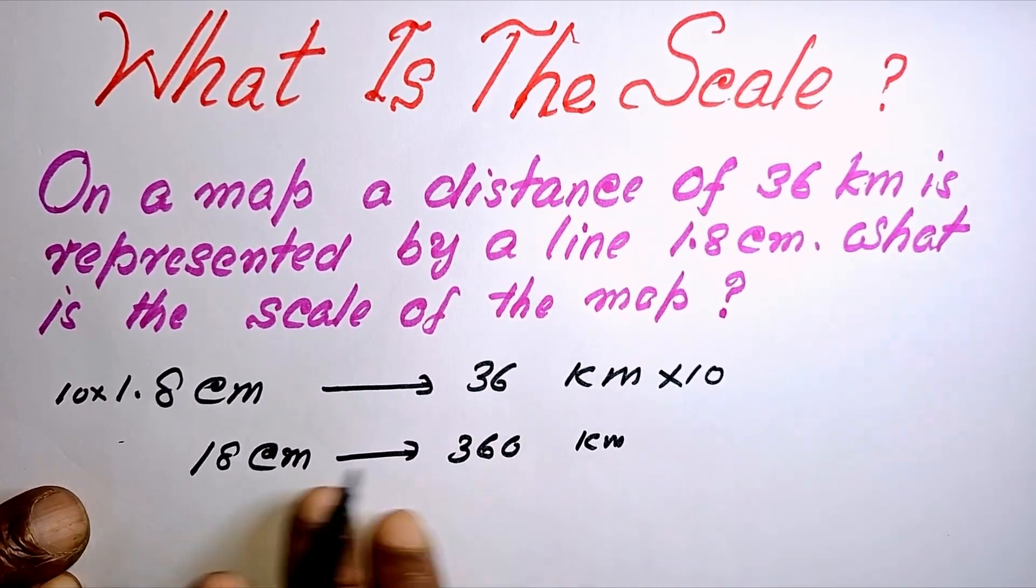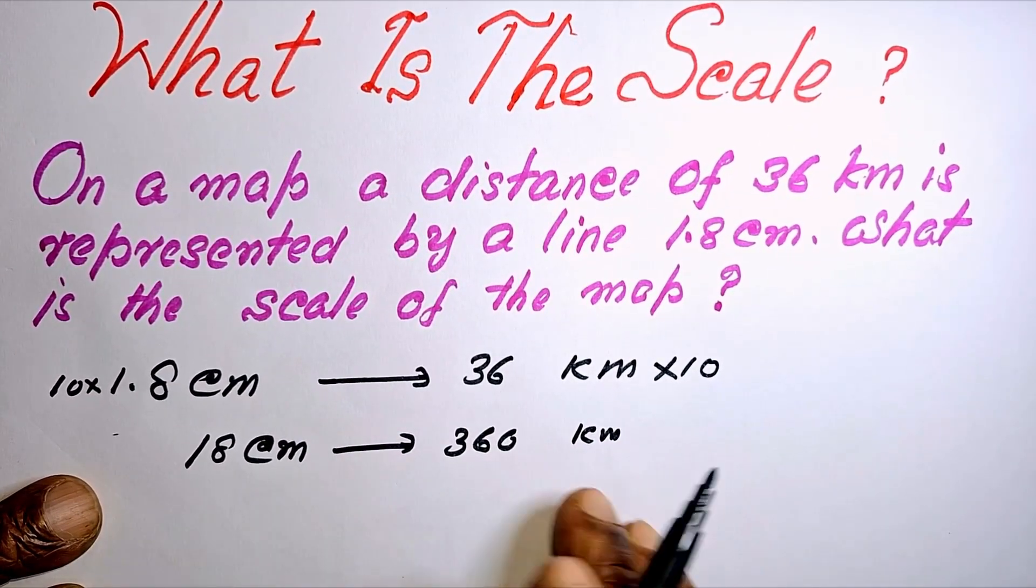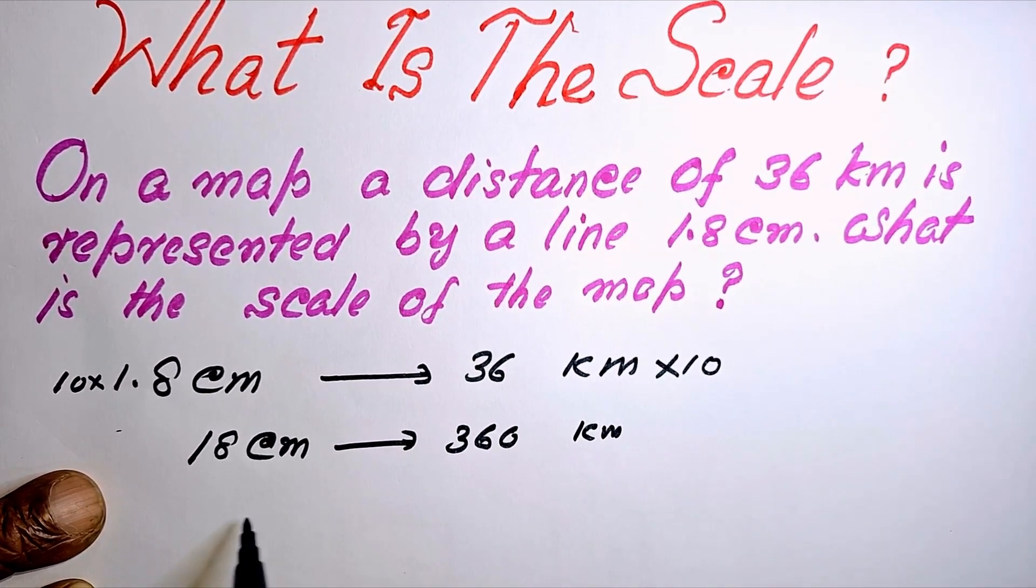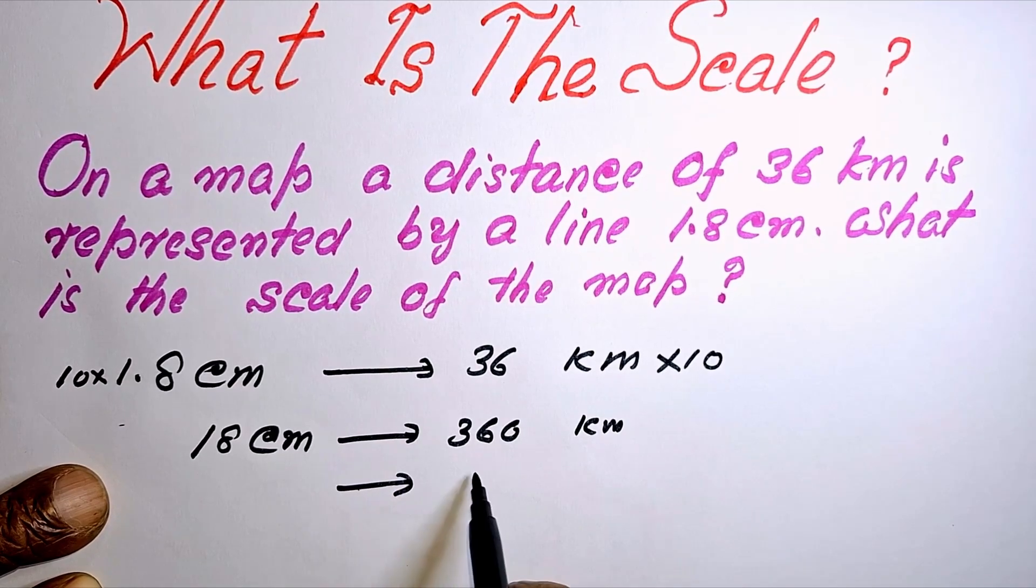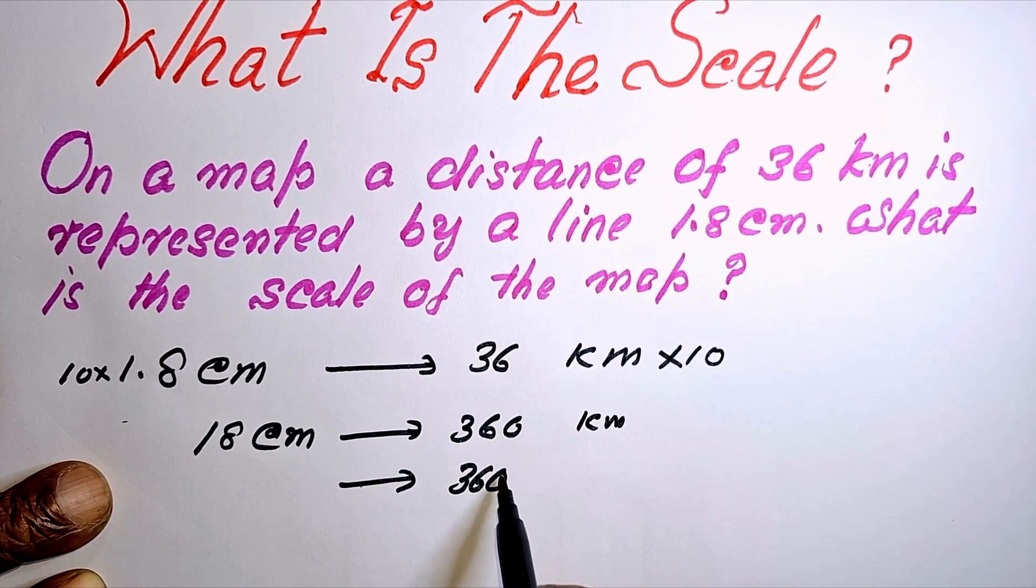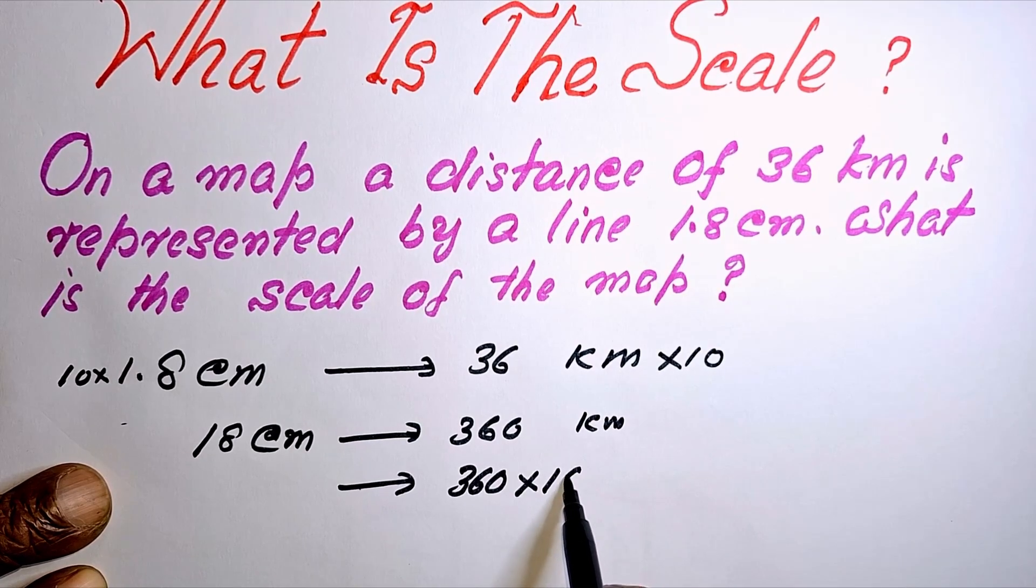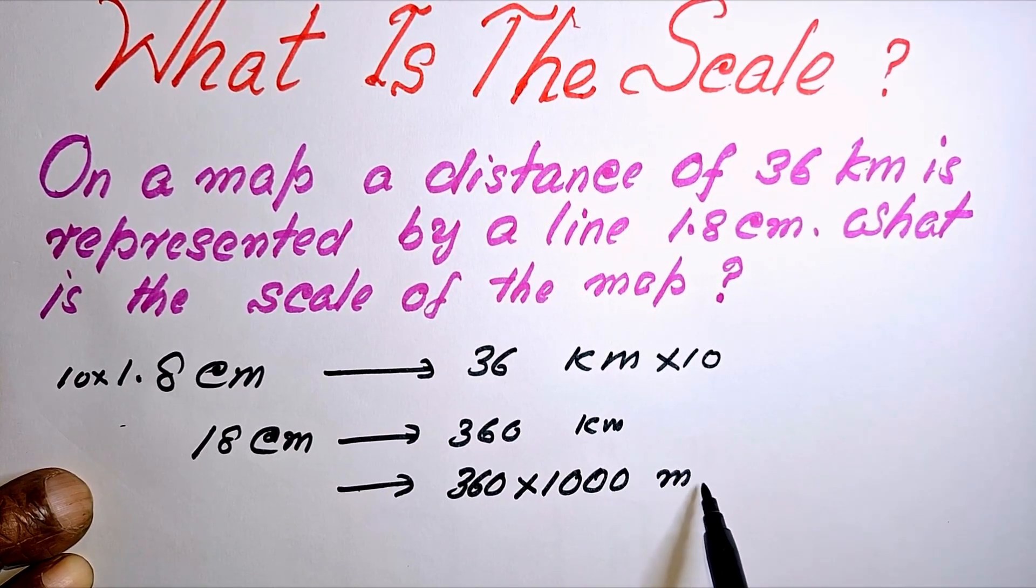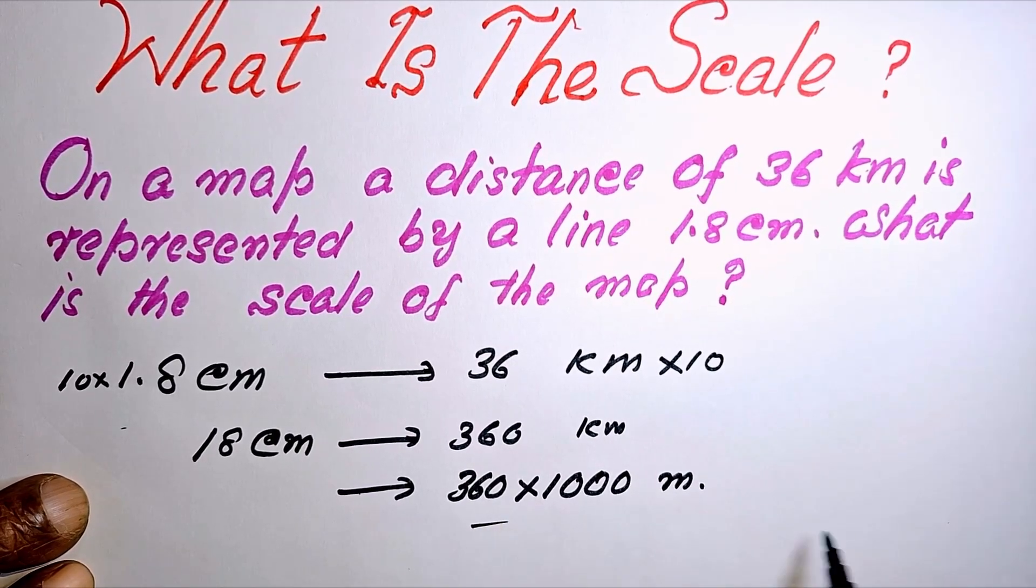both sides should be in the same units. Now we have to convert this kilometers into centimeters. First, we can convert this 360 kilometers into meters by multiplying by 1000. That is, now it is in meters.